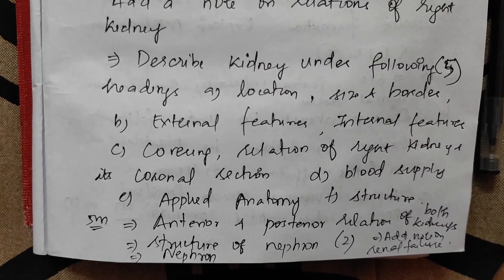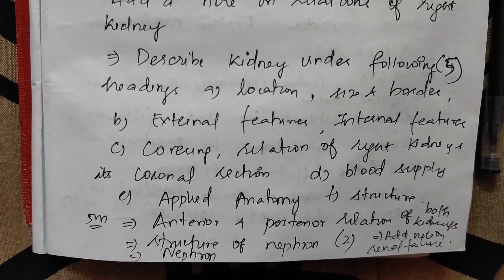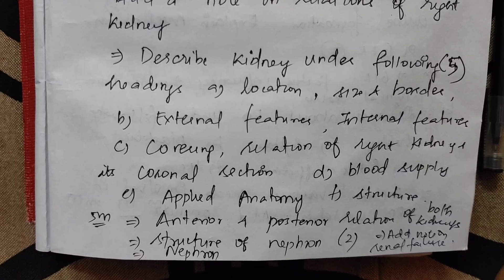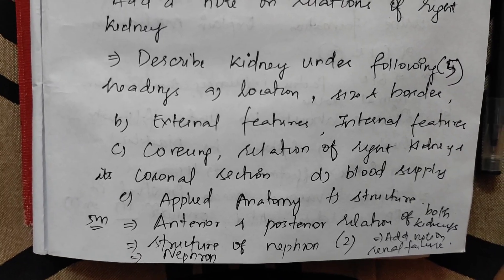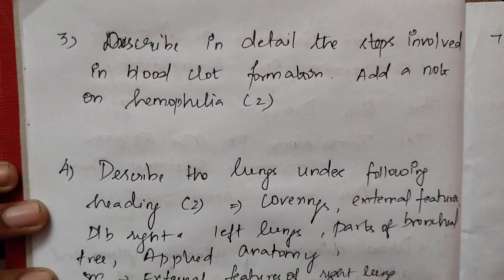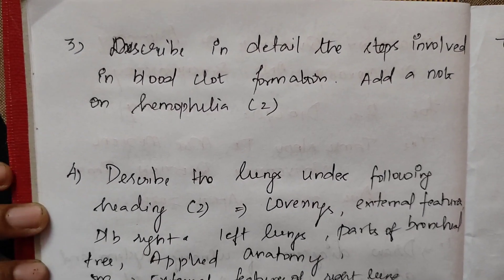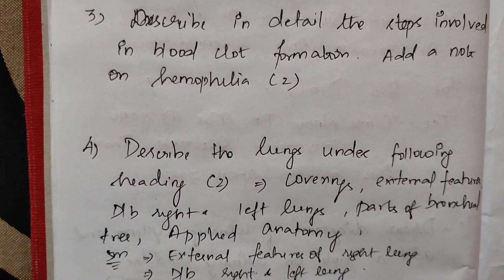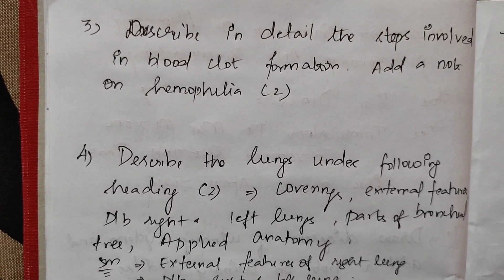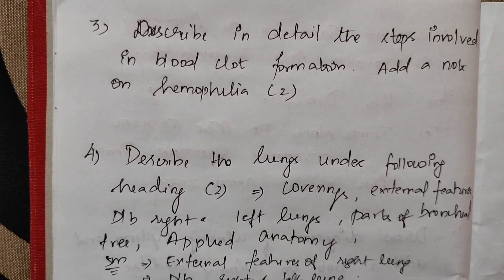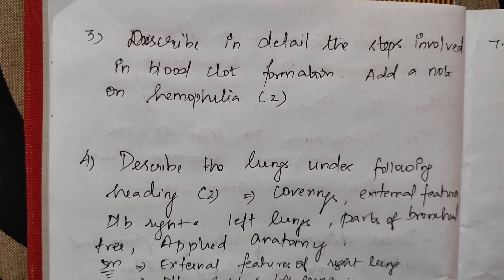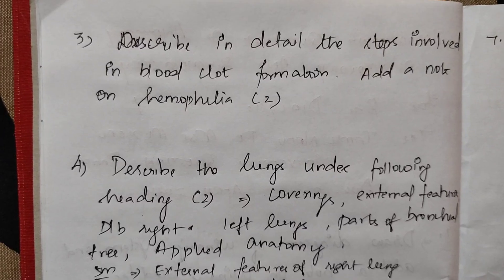Next, add a note on renal failure — this appears in both 15-mark and 5-mark categories. Then, describe in detail the steps involved in blood clot formation and add a note on hemophilia. This question appears 2 times for 15 marks.